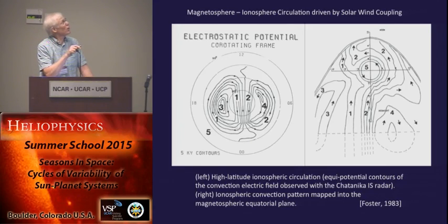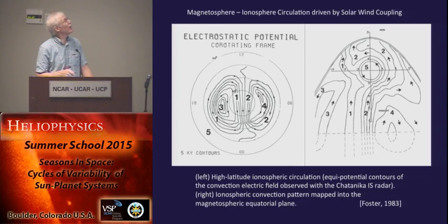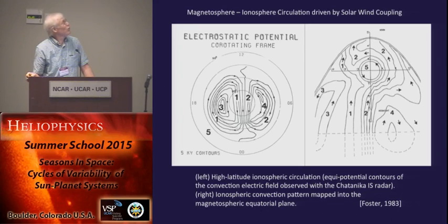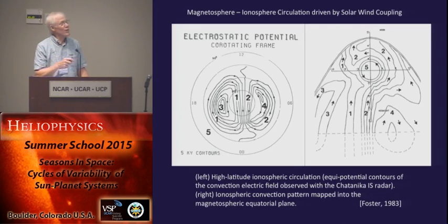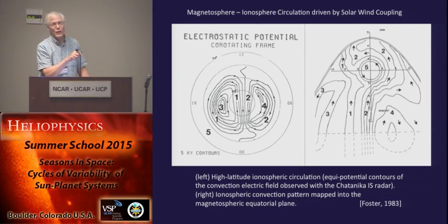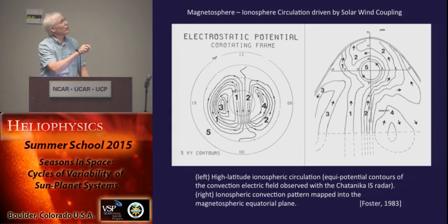These are equi-potential contours of the averaged electric field at high latitudes measured with the Alaskan Chatanika radar. It looks at this two-cell circulation driven by the Dungey cycle. Jan Sojka did some mapping of a preliminary magnetic field model from the ionosphere into the equatorial plane of the magnetosphere — sun at the top, Earth in the center, magnetotail here, dusk and dawn. All of these regions seen at the ionosphere map into corresponding regions of the magnetosphere.